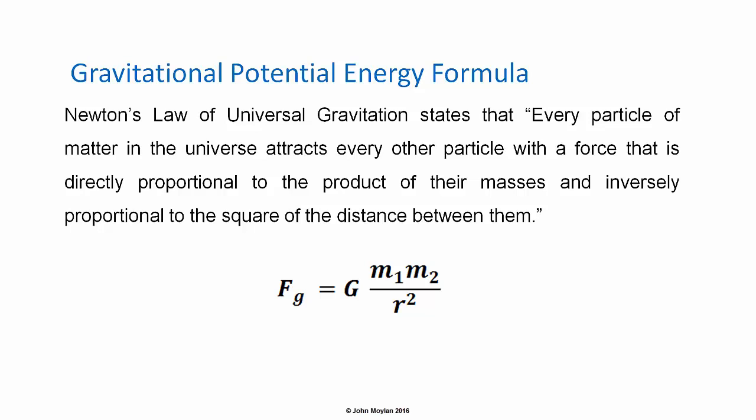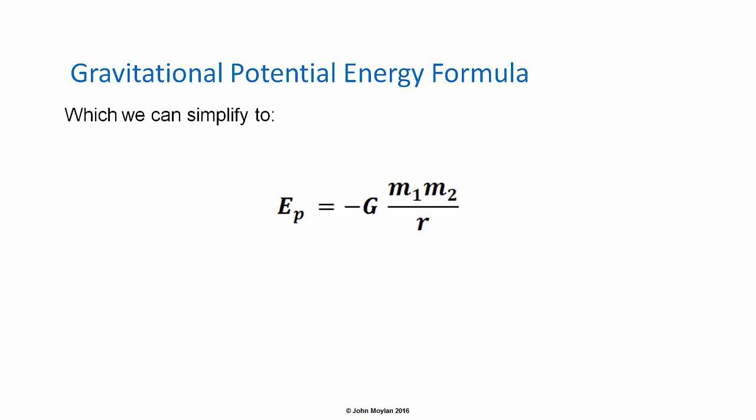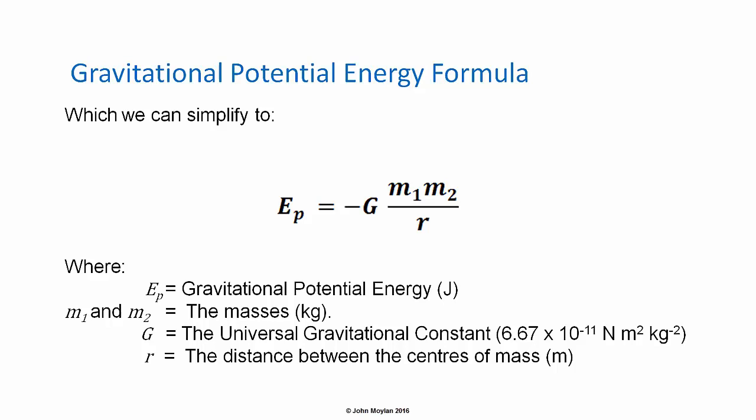Substituting from Newton's law of universal gravitation into the formula for gravitational potential energy, we get E subscript p equals minus capital G times m1 times m2 over r squared, multiplied by r, the distance between the centers of mass. This simplifies to E subscript p equals minus G times m1 times m2 over r, where E subscript p is gravitational potential energy in joules, m1 and m2 are the masses of the two objects in kilograms, G is the universal gravitational constant, and r is the distance between the centers of mass of the two objects in meters.